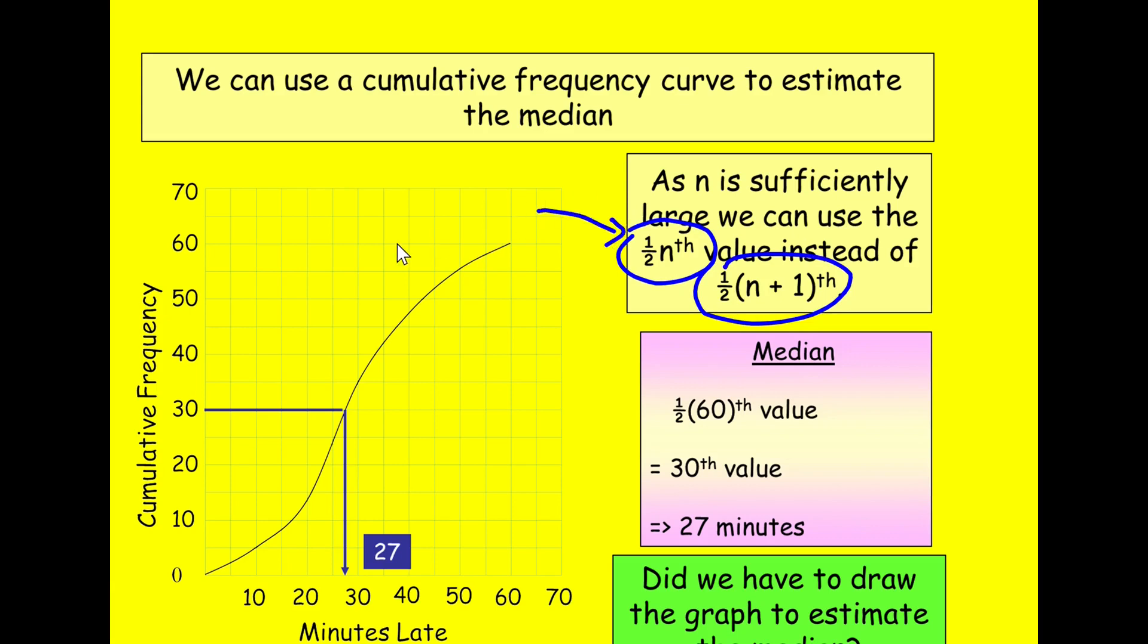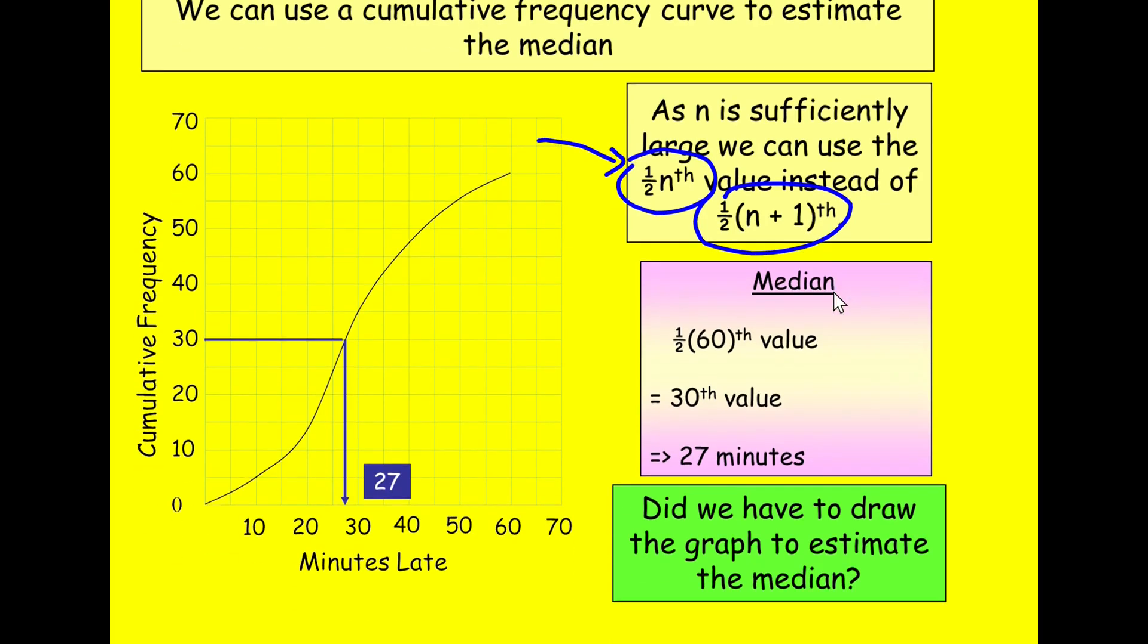If you do go with half N plus one, like you're not doing anything wrong, in this case, it's just, it's just an additional thing. So just be aware of these two things. For continuous data, we always use a half N actually. So there, this can be slightly confusing, but I suppose to summarize, use half N plus one for lists and stem and leaf. When you start getting large amounts of data or it's continuous, just forget about adding the one and just do half N. I'm not going to go into any more detail on this because I covered calculating the median of the cumulative frequency graph previously.